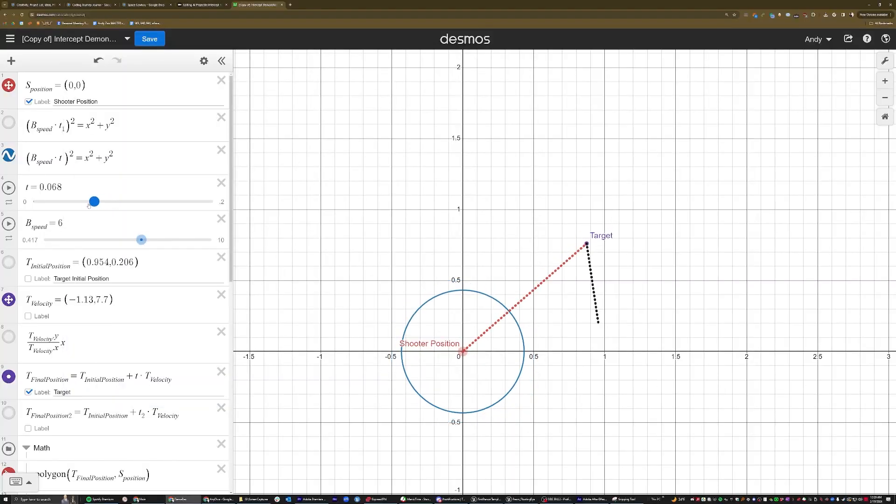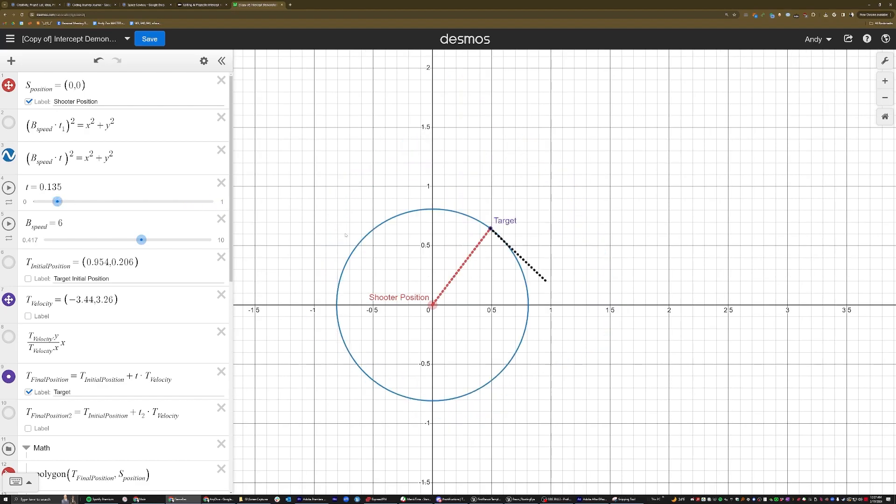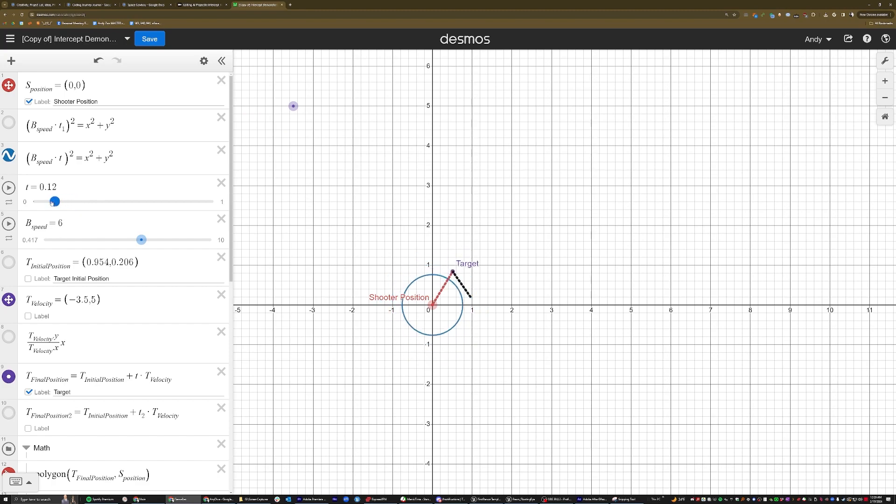Now, if you remember, quadratic equations don't always have solutions. They might have 0, 1, or 2 because sometimes, if the target is already traveling too fast and the bullet can't catch up, then it'll never hit it. Or it might only have one chance to hit it. Or it might have two because the path crosses over two points in the bullet's possible positions.